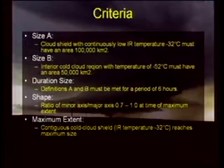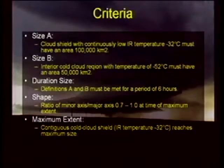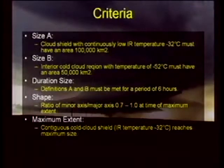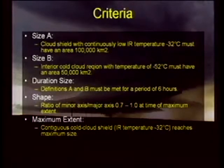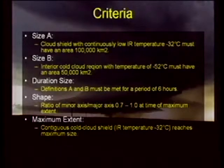Here are the criteria associated with defining something as an MCC. These things are really quite large in size — about the size of the state of Iowa in terms of their cloud coverage. The cloud shield has to be continuous low IR temperatures of at least minus 32°C, and it must have an area of at least 100,000 square kilometers. The second thing is you need an interior colder cloud region with temperatures of at least minus 52°C, and that area must have an aerial extent of 50,000 square kilometers. Both size criteria must be met for a period of at least six hours.